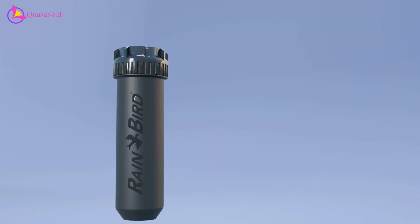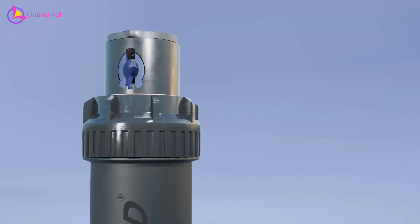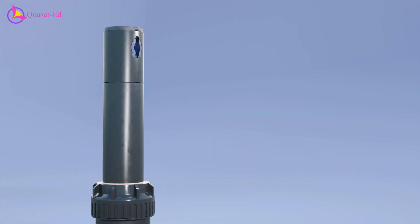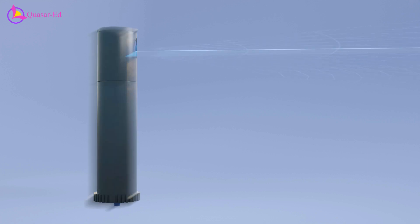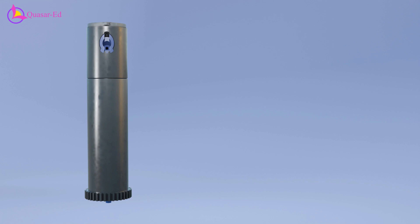This explains how the sprinkler's pop-up mechanism functions. Now let's delve into the more fascinating aspect—how the stem rotates in both directions with adjustable angle control.